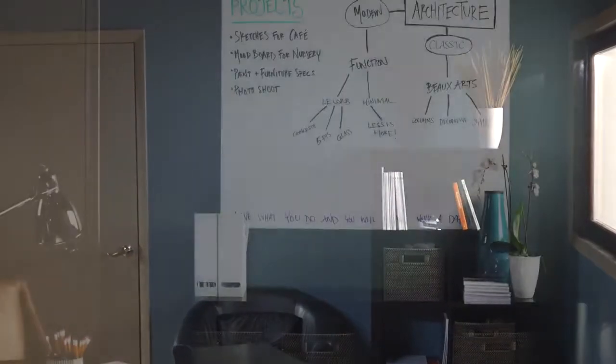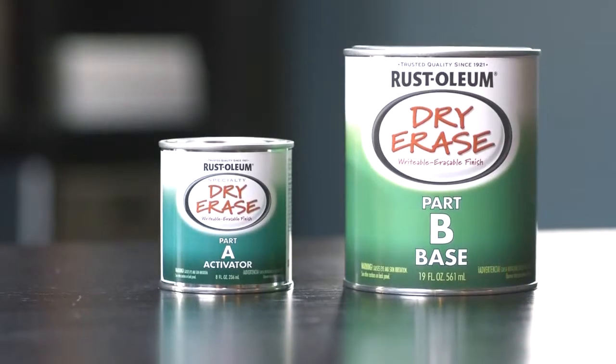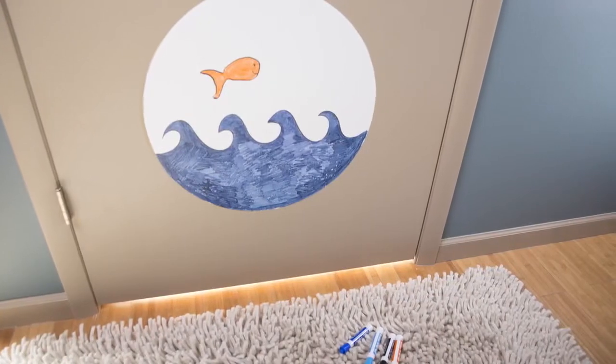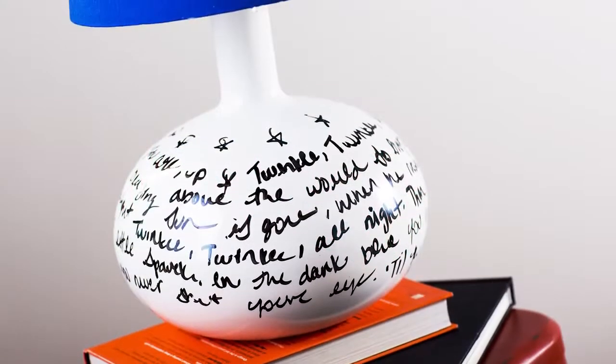Transform a once forgotten place into a creative, productive space with Rust-Oleum Specialty Dry Erase Paint. Time to put the fun in functional as you turn an ordinary surface into an extraordinary dry erase finish that you can enjoy for years to come.